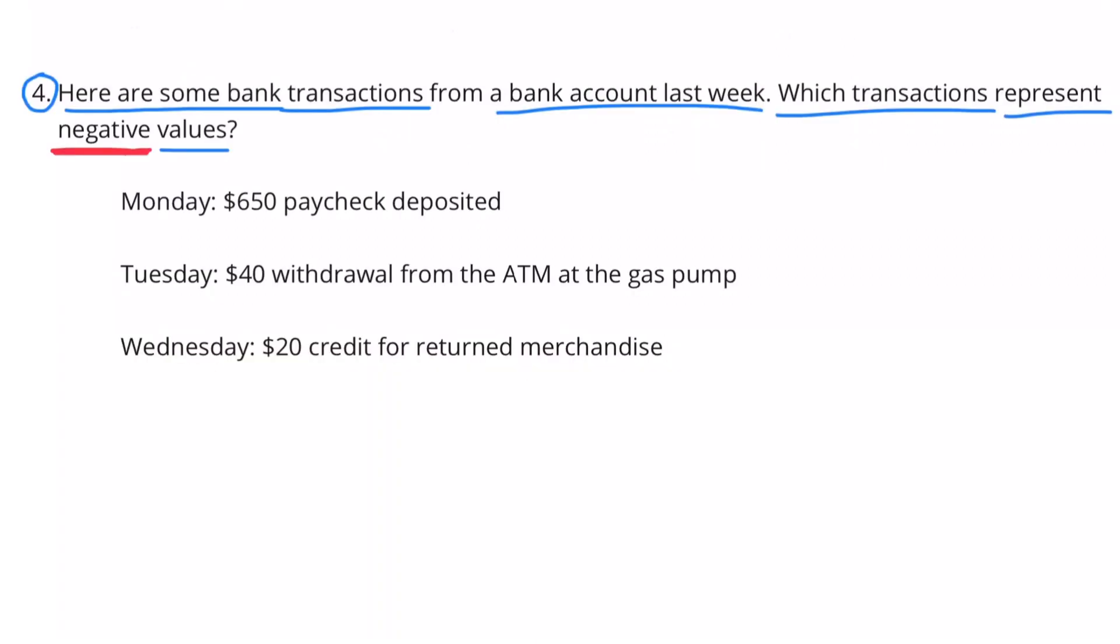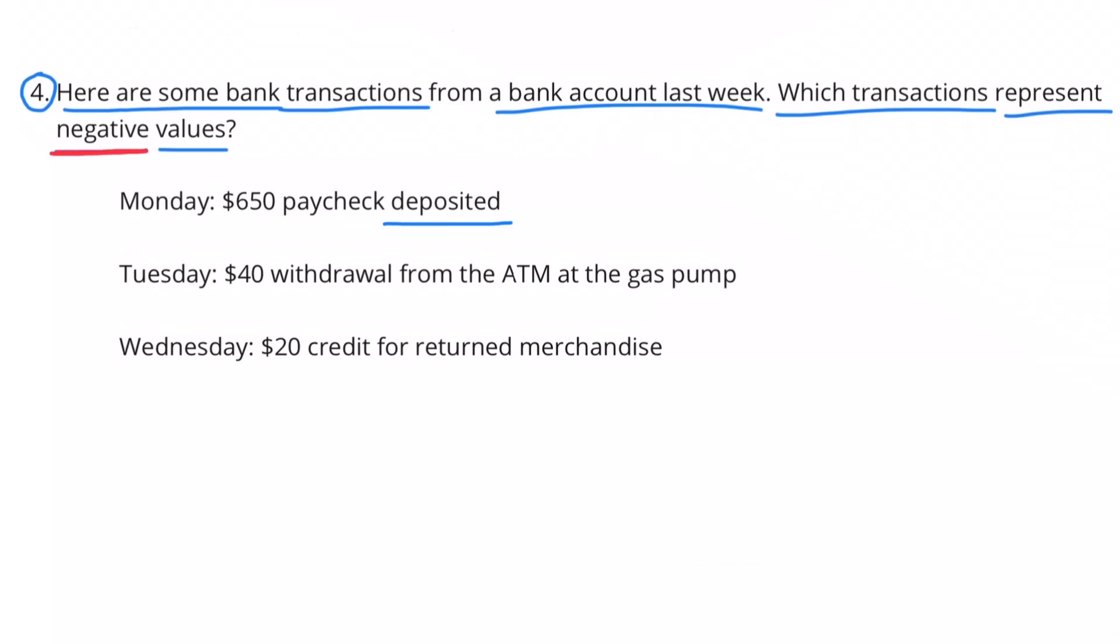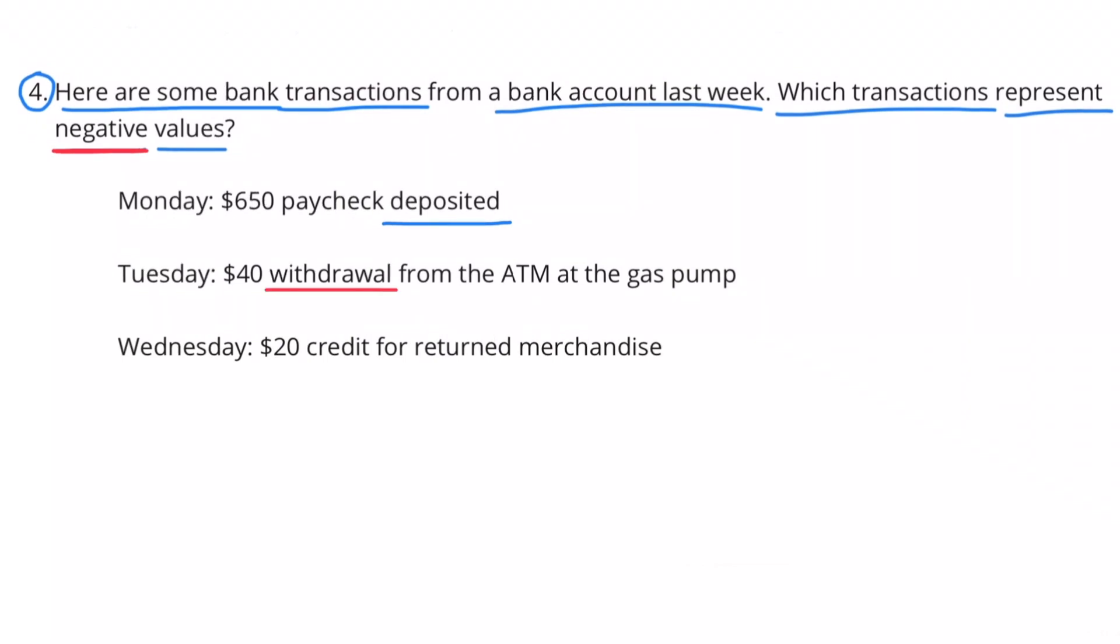Problem 4: Here are some bank transactions from a bank account last week. Which transactions represent negative values? Monday, $650 paycheck deposited. That's not a negative. That's a positive because it was deposited. Tuesday, $40 withdrawal from the ATM at the gas pump. That's a negative because money was withdrawn.